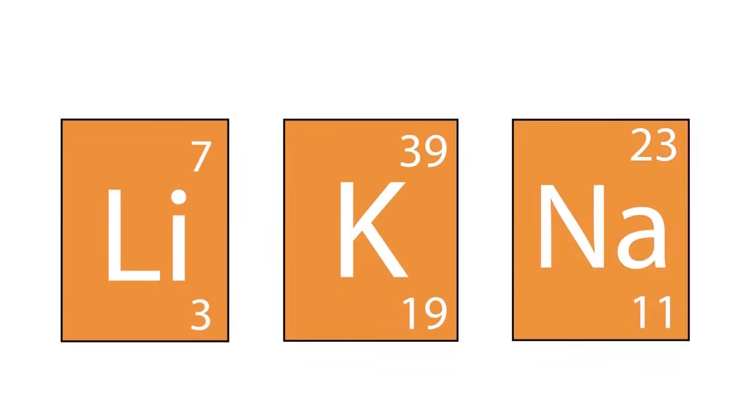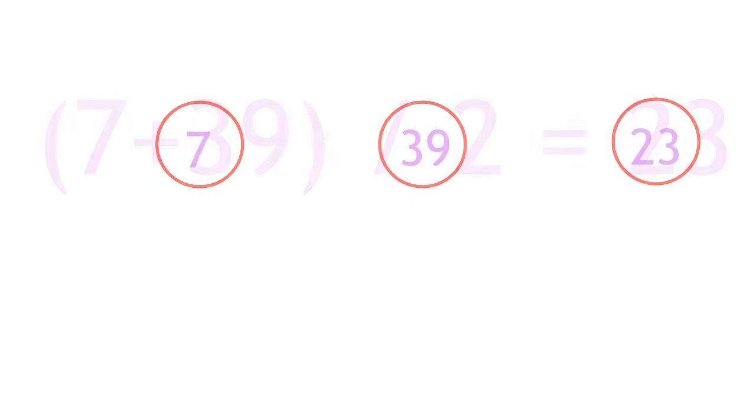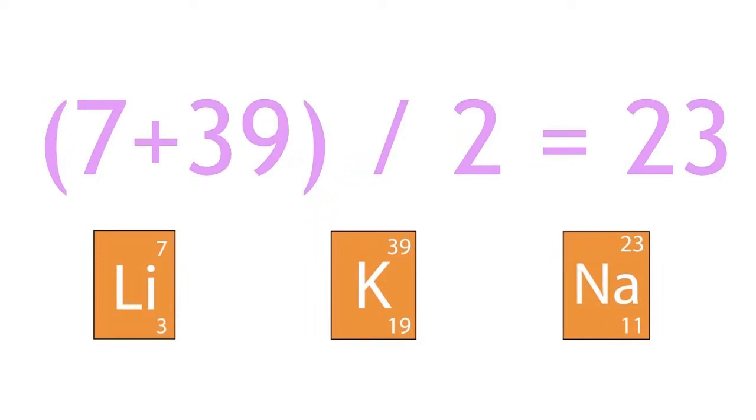The interesting characteristic of triads was that when they were placed in order of their atomic mass, the middle element always had an atomic mass which was an average, or very close to an average of the other two elements in the triad.